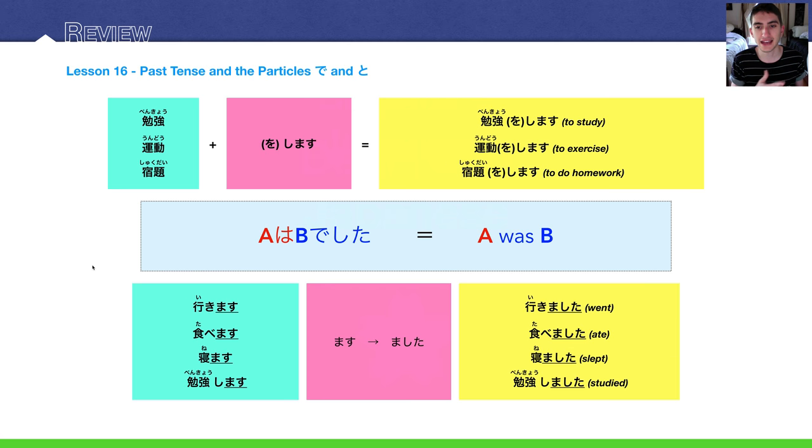Next, I want to talk about the past tense with desu. The past tense is deshita. A wa B deshita. A was B. With masu verbs, regular verbs, you take the masu ending and you change it to mashita. So, ikimasu, to go, becomes ikimashita, went.